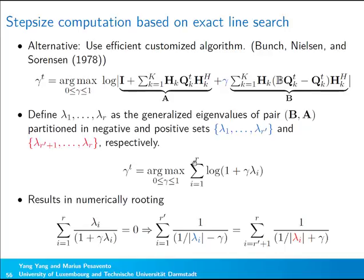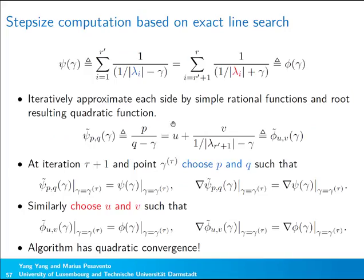To maximize this function we take the derivative and equate it to zero, giving us a sum of rational functions in gamma set equal to zero. By separating the rational functions that depend on the negative eigenvalues from those depending on the positive eigenvalues, we can define a structured closed-form approach for efficient computation.